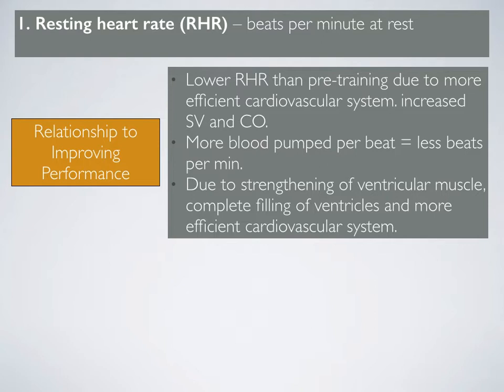The heart muscle improves with training — it actually gets stronger. So when we apply the principle of progressive overload, we apply an increased intensity in our training with each session or each week, which applies a stress or extra load to our cardiovascular system. As a result, our cardiovascular system gets stronger, the heart muscle gets stronger, and more blood is able to be pumped out of the left ventricle with each beat, which refers to stroke volume.